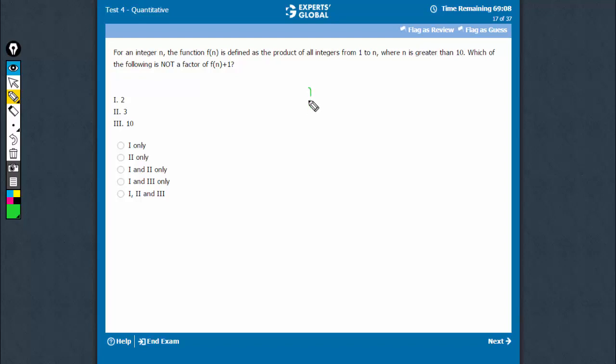So, in simple words, this means that f(n) is equal to factorial of n. n is greater than 10. Let's assume it to be 11 or anything. It doesn't actually matter. 11 factorial plus 1.